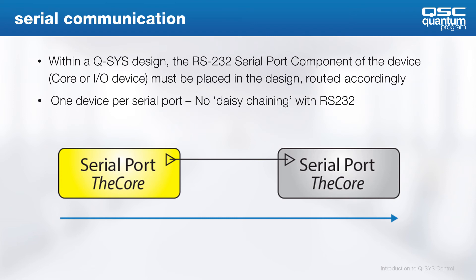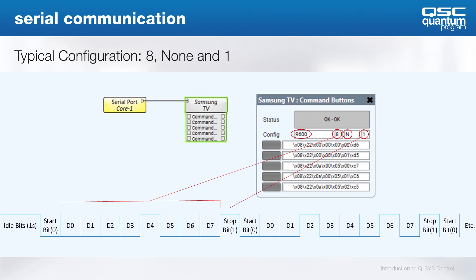In order to add serial control to your design, you will need to add the serial port component of the QSYS device from your inventory to the schematic, and create one connection to the control component that will run on the core. Remember, you cannot daisy-chain RS-232 signals. In this example design, if you open a command button component, you can see our serial port configuration of 9600, 8, none, and 1.